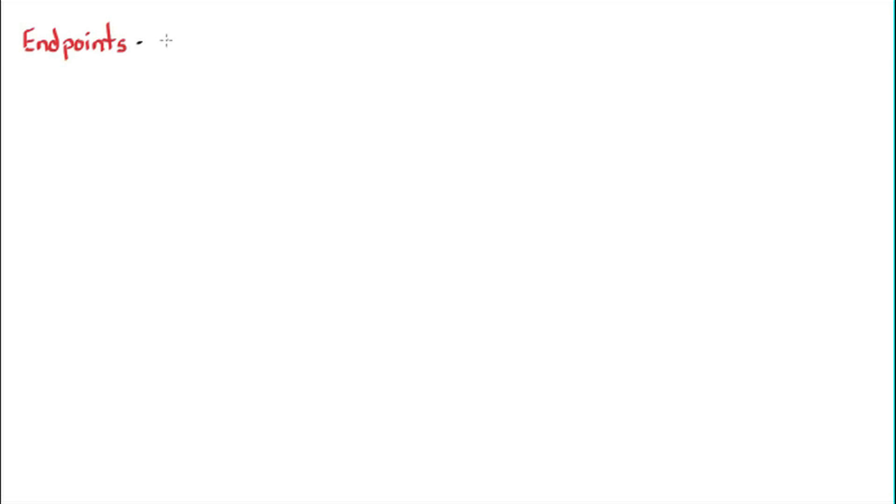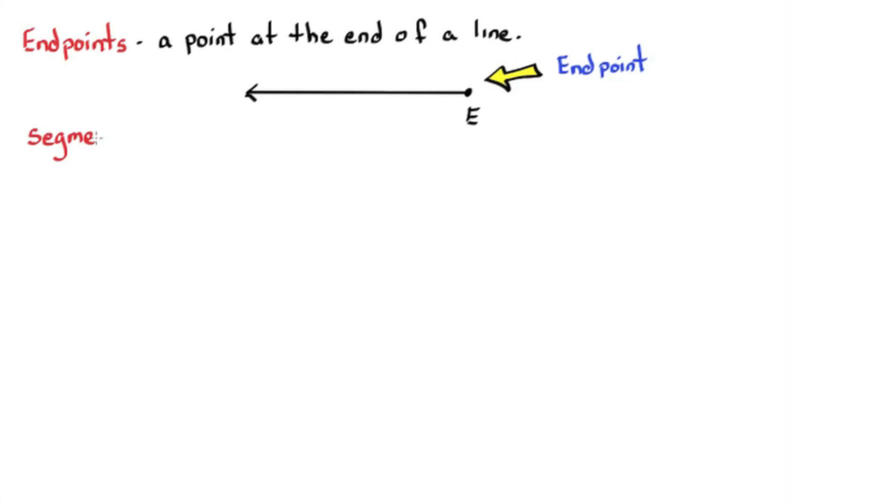So let's start with some vocabulary. Endpoints. A point at the end of a line. So here I have point E and is the endpoint of this line.